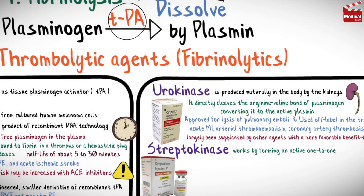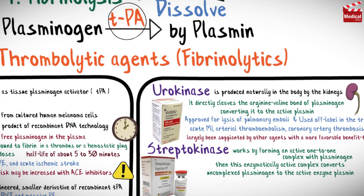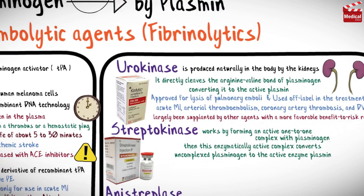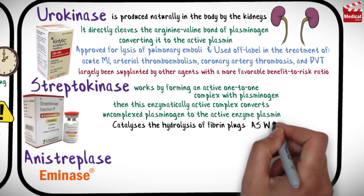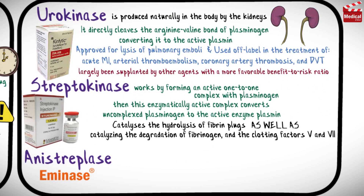Streptokinase works by forming an active one-to-one complex with plasminogen. This enzymatically active complex then converts uncomplexed plasminogen to the active enzyme plasmin. It catalyzes the hydrolysis of fibrin plugs, as well as catalyzing the degradation of fibrinogen and clotting factors 5 and 7. Streptokinase is rarely used now and is no longer available in many markets.